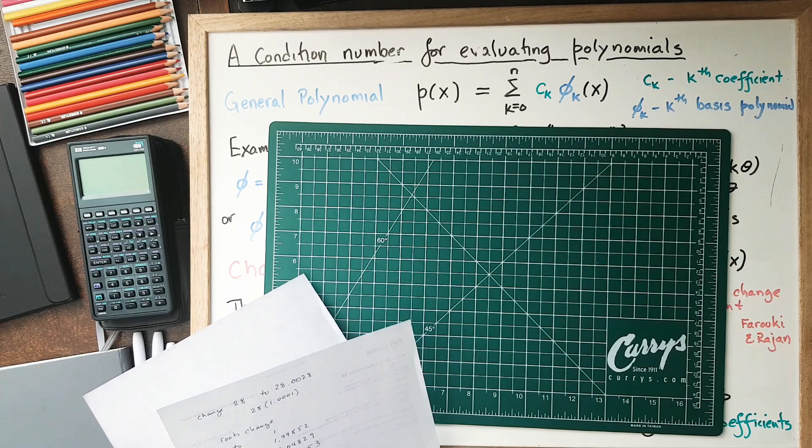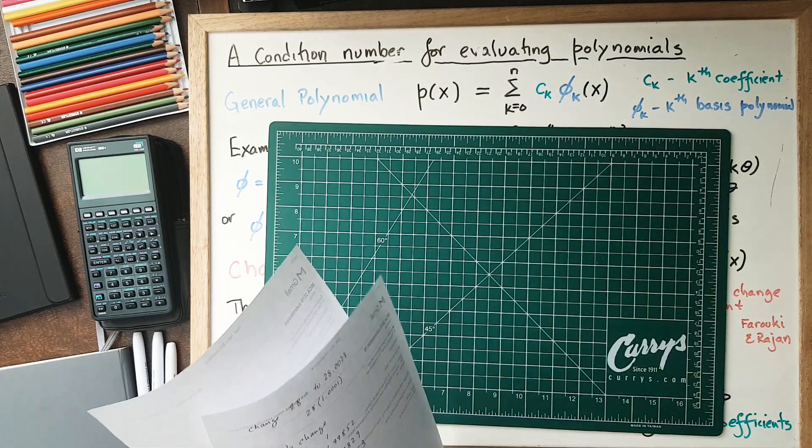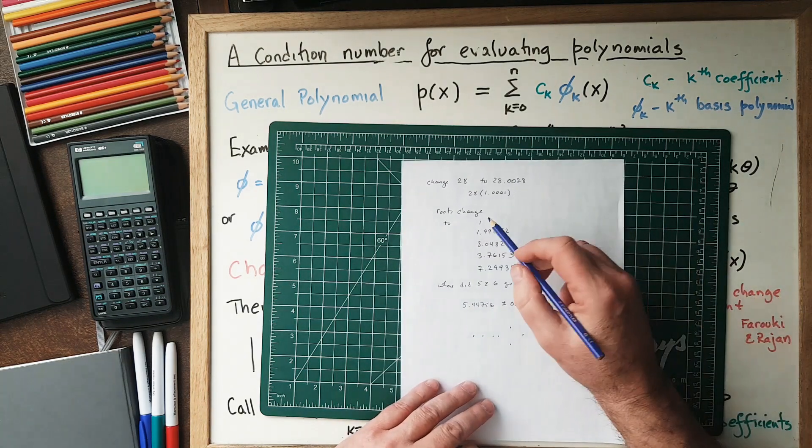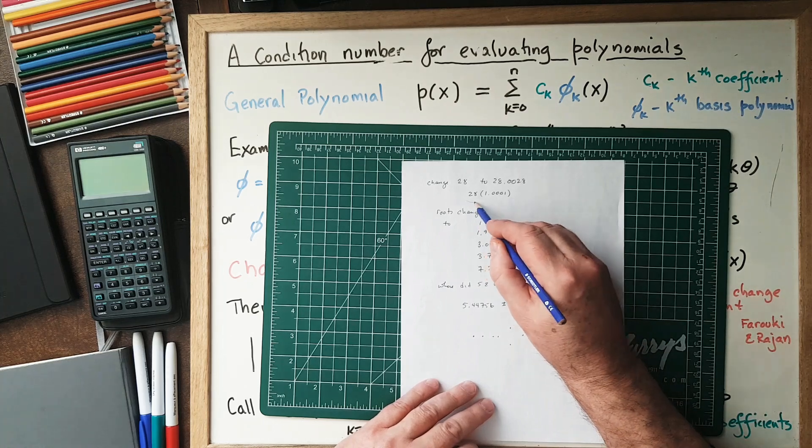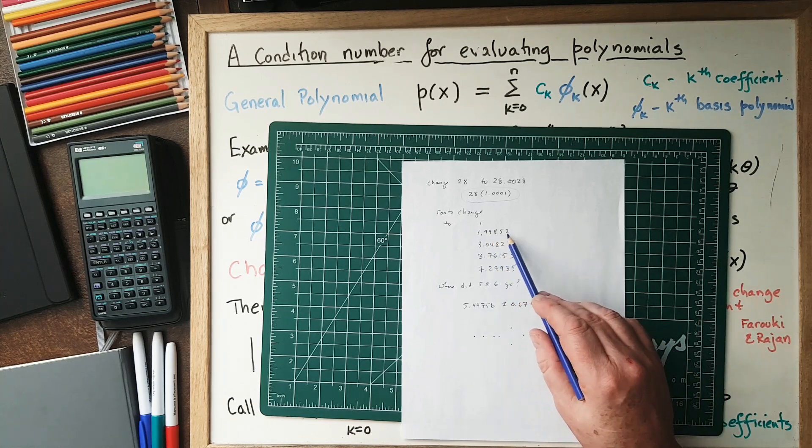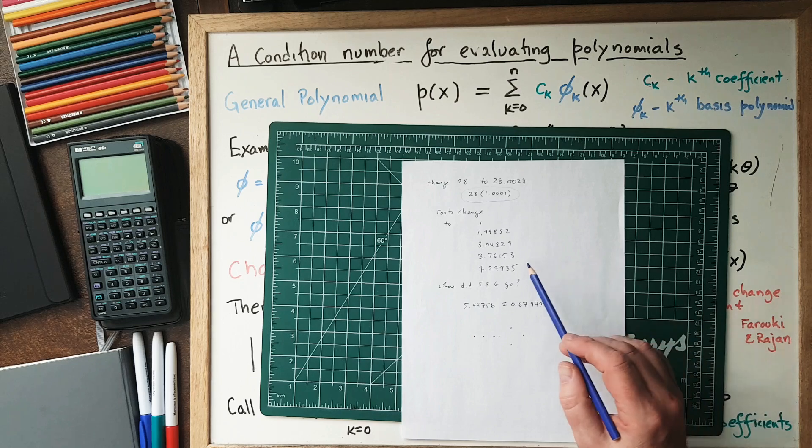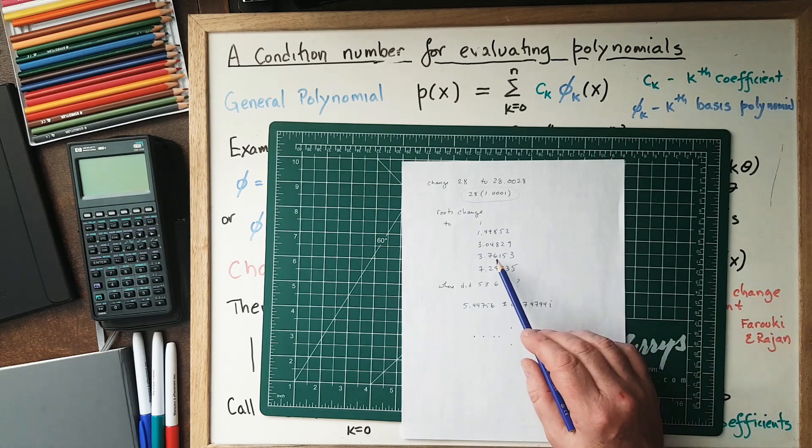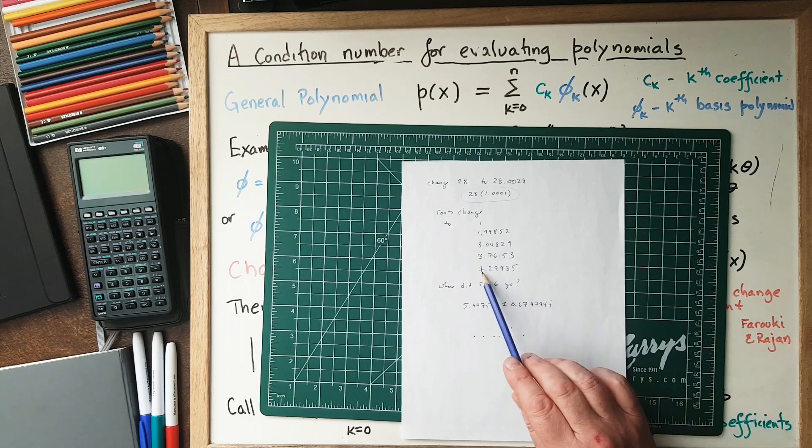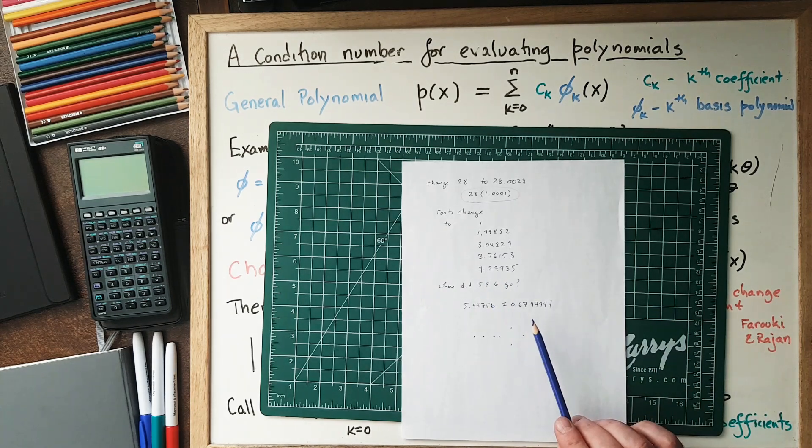Let's take a quick look at what happens if I change the 28, the second coefficient, the minus 28. If I change that 28 to 28 times 1.0001, so change one part in 10,000, then the roots, which were 1, 2, 3, 4, 5, 6, and 7, change to 1, 1.998 (pretty close to 2), 3.048 (pretty close to 3), 3.76 (not very close to 4, but probably the 4 that changed), and 5 and 6 are gone. The 7 changes to 7.2993. Where did 5 and 6 go?